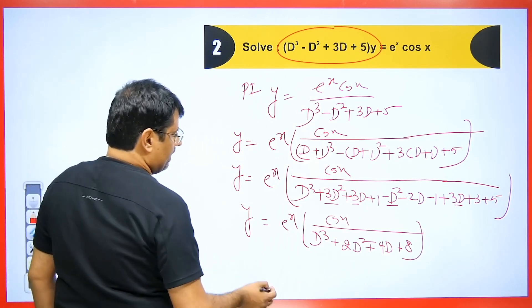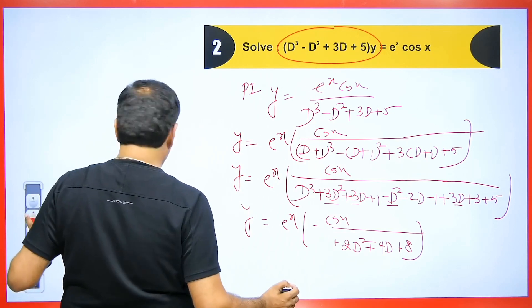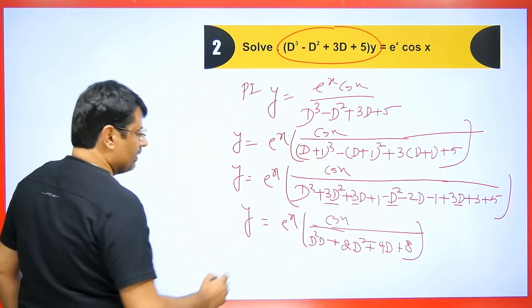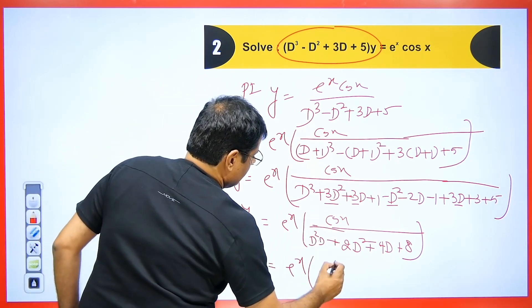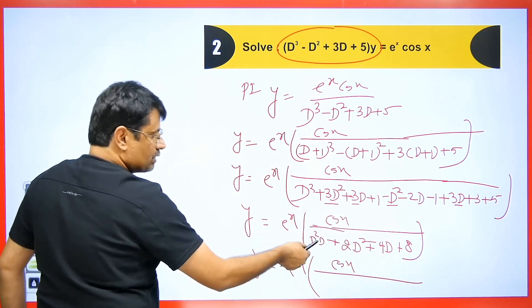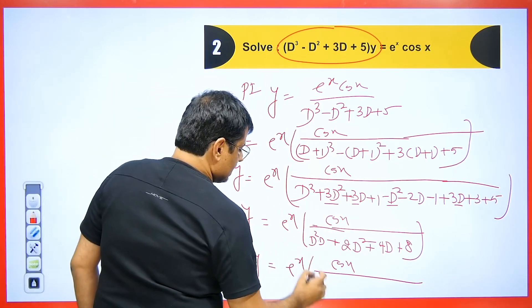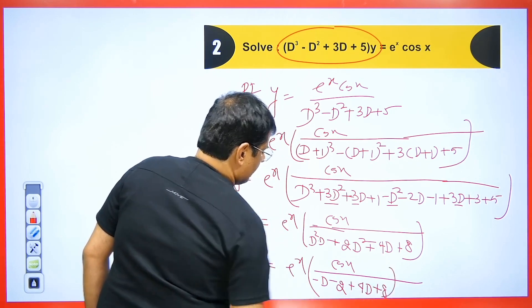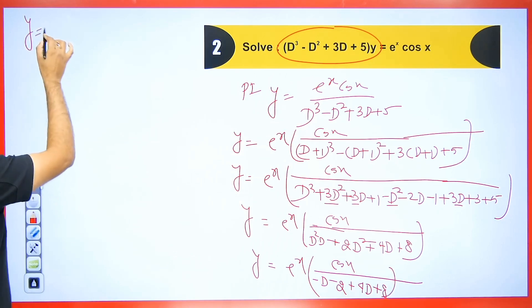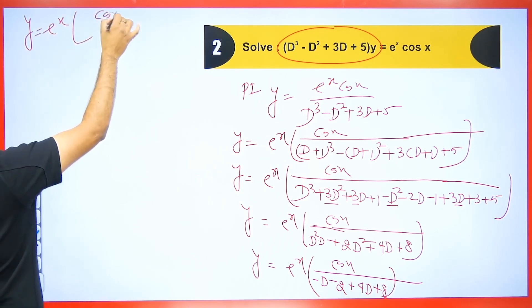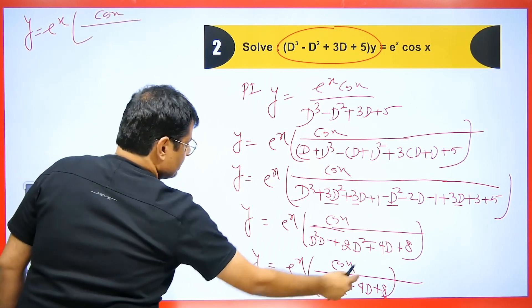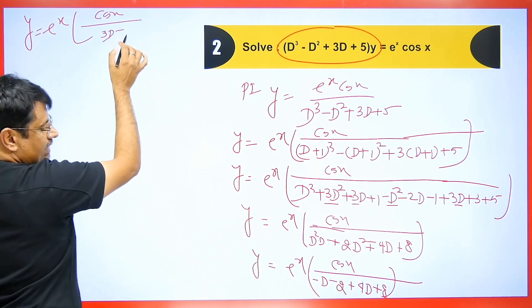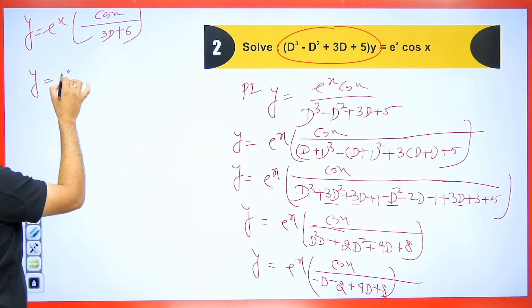So y equals e to the power x, and we obtain cos x with D cubed, then 3D squared minus D squared giving 2D squared, then 3D plus 3D minus 2D giving 4D, and the constants giving 8. For the PI of cos x, write D cubed as D squared times D. Replace D squared with minus 1, so it becomes minus D. Therefore we get minus 2 plus 4D plus 8, simplifying to 4D minus D giving 3D, and 8 minus 2 giving plus 6.